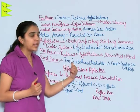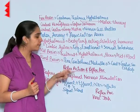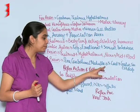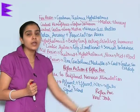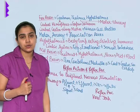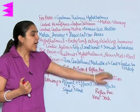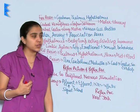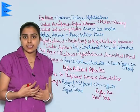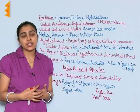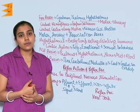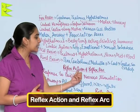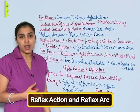The hindbrain consists of pons, cerebellum, and medulla. The medulla is further attached to the spinal cord and is responsible for regulation of gastric acid secretion, respiration, and certain cardiovascular activities.